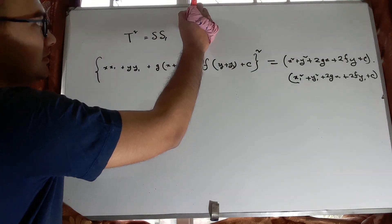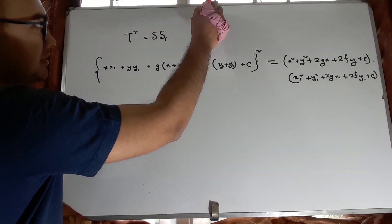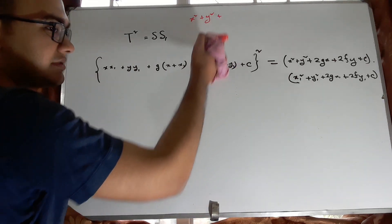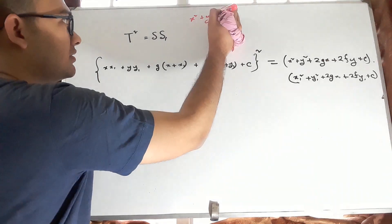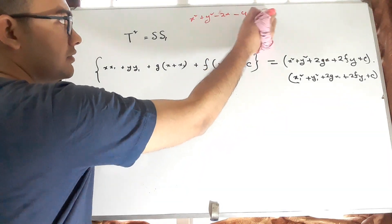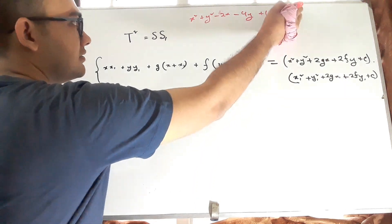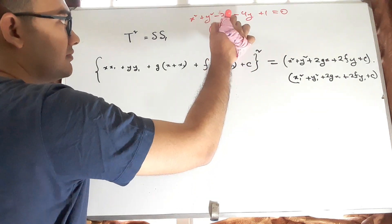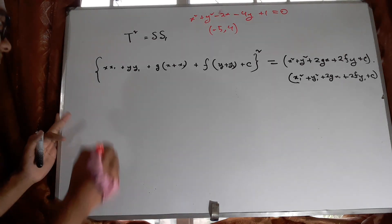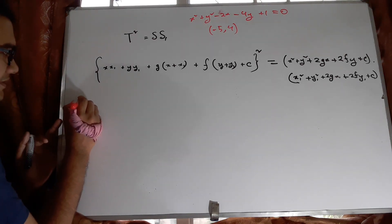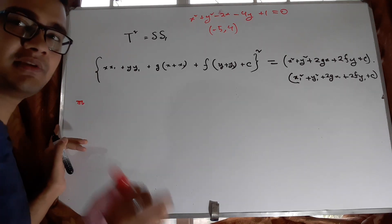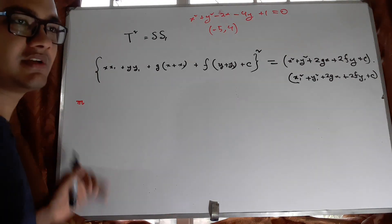Let me write down the circle equation again: x squared plus y squared minus 2x minus 4y plus 1 equals 0, and the given point is (−5, 4). Let's apply this formula — it's going to be a large calculation, so I'll skip some intermediate lines and write the key results.